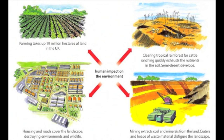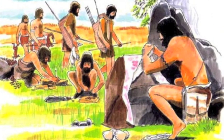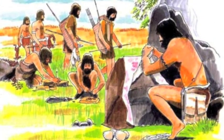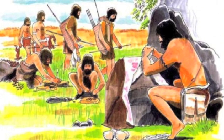Before the shift to settled communities, the human impact on the environment was no more than that of any other medium-sized animal. Now we live in cities, transform the landscape, and have the nuclear technology to wipe out life on earth.